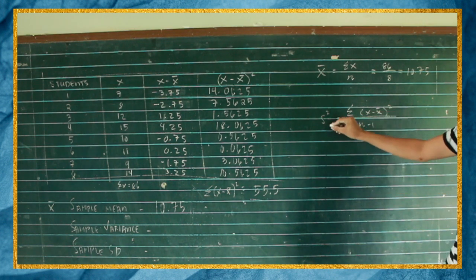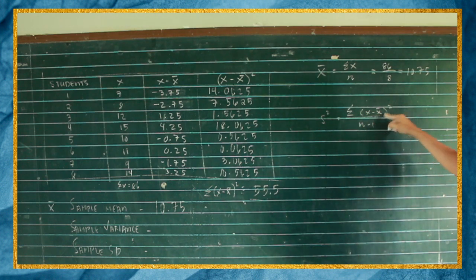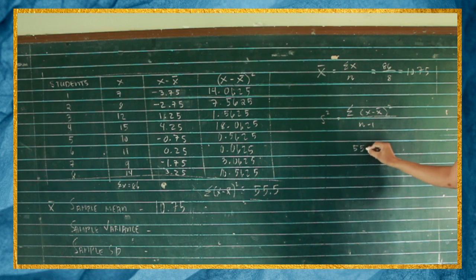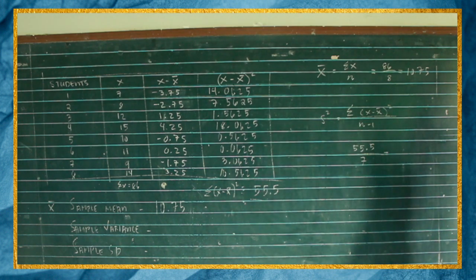So summation of x minus x bar squared, so that is 55.5, over n minus 1. Ang n natin is 8 minus 1, that is 7. So if you divide 55.5 divided by 7, so that would be 7.928. So dito pwede namin siya 7.93.